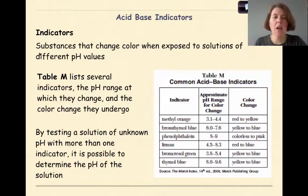So what is an indicator? Indicators are substances that change color when exposed to solutions of different pH values. So it's going to change color depending on whether it's placed in acidic solution or basic solution. Table M of your reference table lists several indicators, the pH range at which they change, and the color change they undergo.